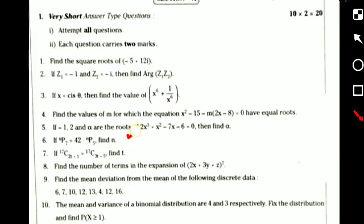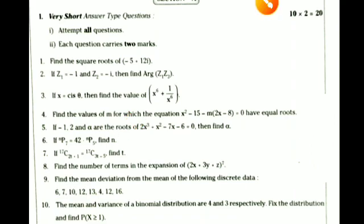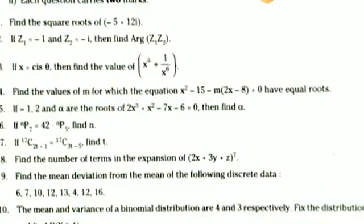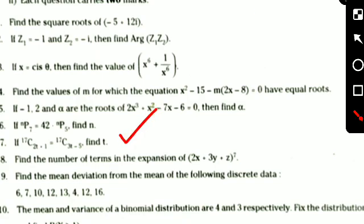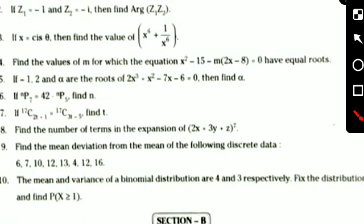Questions 6 and 7 are from permutations and combinations. The 6th question: if ₙP₇ = 42 × ₙP₅, find the value of N. The 7th question: if ¹⁷C₍₂ᵣ₊₁₎ = ¹⁷C₍₂ᵣ₋₅₎, find the value of T. The 8th question, from binomial theorem: find the number of terms in the expansion of (2x + 3y + z)⁷. The 9th question, from measures of dispersion: find the mean deviation from the mean of the following discrete data — 6, 7, 10, 12, 13, 4, 12, 16.